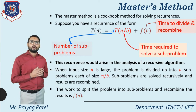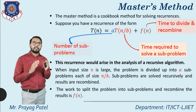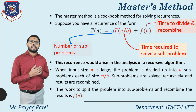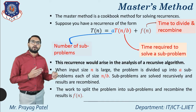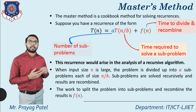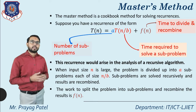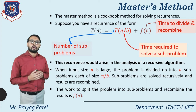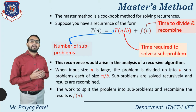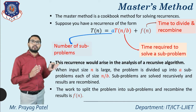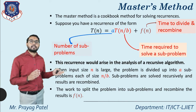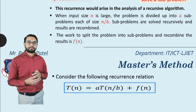This recurrence arises in the analysis of recursive algorithms. When input size n is large, the problem is divided into 'a' subproblems each of size n/b. Subproblems are solved recursively, and results are recombined. The divide and recombine process is considered as f(n).